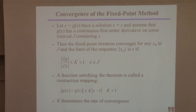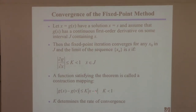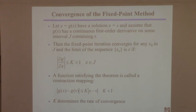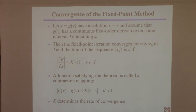This condition can equivalently be written as a contraction mapping. The idea is: you take two points x and b, evaluate the difference, then take g(x) and g(b) — the difference between those is less than the difference between x and b. The space is contracting. If a function is a contraction mapping, it means it has nice, slowly varying behavior. And k here tells you the rate of convergence — if k is close to 1, it converges slowly; if k is small, it converges fast.